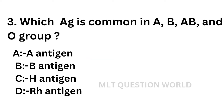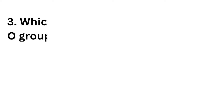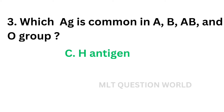Question number 3: Which antigen is common in A, B, AB and O blood groups? Option A: A antigen, option B: B antigen, option C: H antigen, option D: RH antigen. The correct answer is option C, H antigen. H antigen is common in blood groups A, B, AB and O.